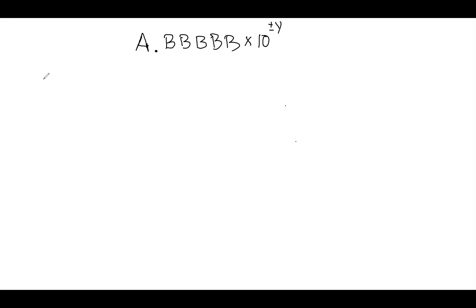Let's say I have the number 477,903. I want to put this into scientific notation. The first thing I do is read my number from left to right and find the very first non-zero digit — that's the number 4. My goal is to take the decimal and put it after the 4 to match the scientific notation formula. The decimal, if not written, is assumed to be after the very last digit on the right. So I want to move my decimal one, two, three, four, five spaces.